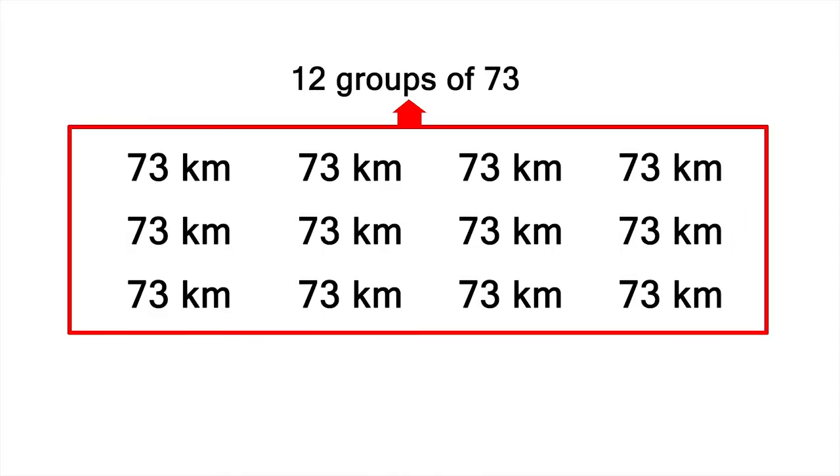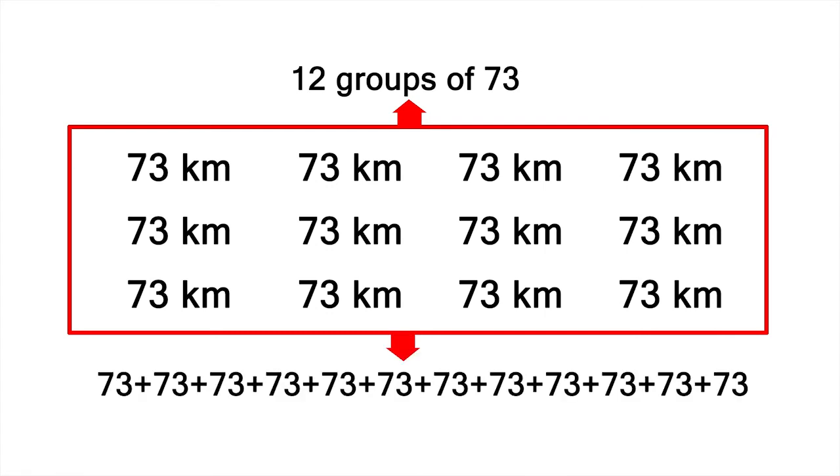We end up with 12 groups of 73. We could use repeated addition to add them up, but a quicker way is to solve the equivalent multiplication problem. 12 times 73. Let's do it!